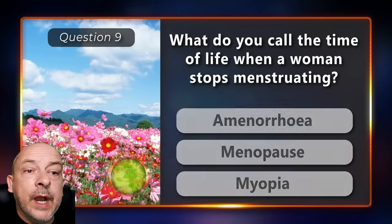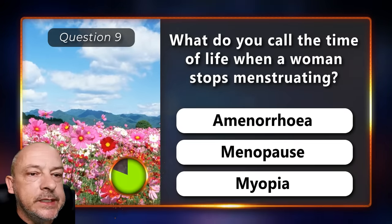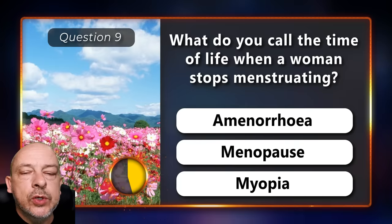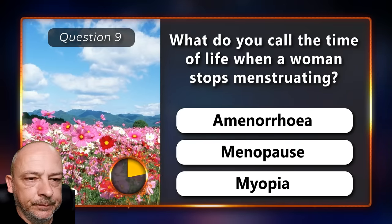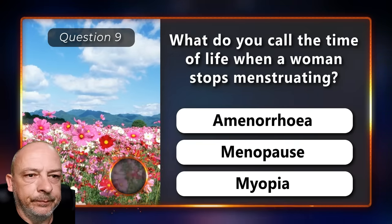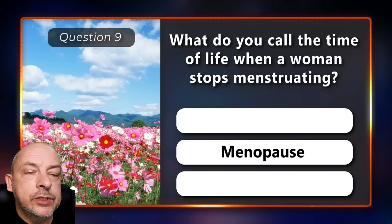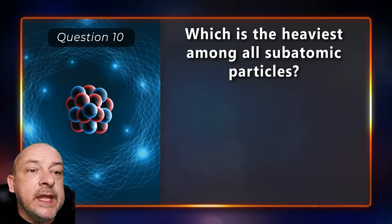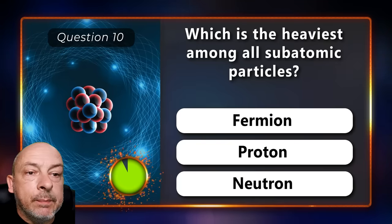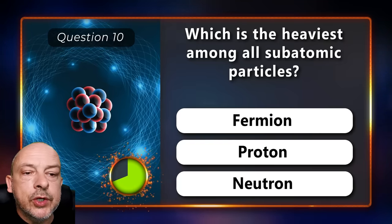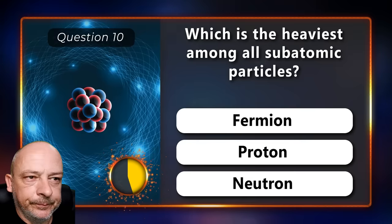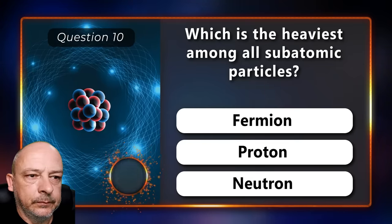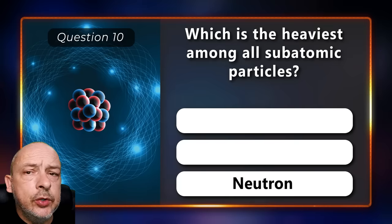What do you call the time of life when a woman stops menstruating — amenorrhea, menopause, or myopia? Menopause. Which is the heaviest among all subatomic particles — the fermion, proton, or the neutron? The correct answer is the neutron.